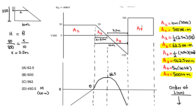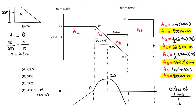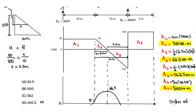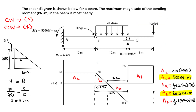Now we're at negative 500. We add area A4: negative 500 plus 500 equals zero. For the A4 region, the shear line is straight, so the moment diagram is linear. We draw a straight linear line from negative 500 back up to zero. We end at zero, which confirms we did this correctly. The moment diagram is now complete.